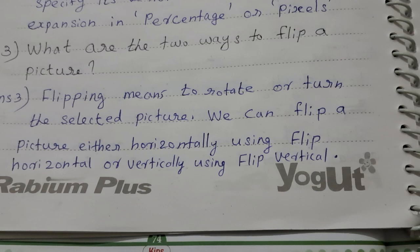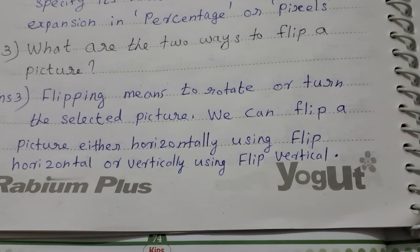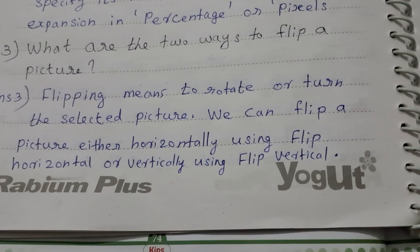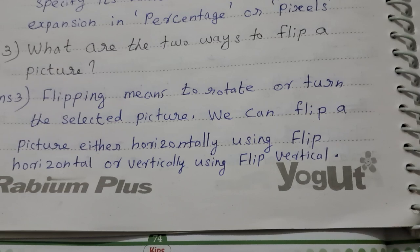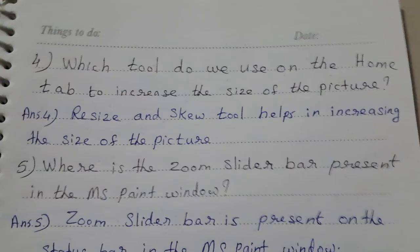What are the two ways to flip a picture? Flipping means to rotate or turn the selected picture. We can flip a picture either horizontally using flip horizontal, or vertically using flip vertical.